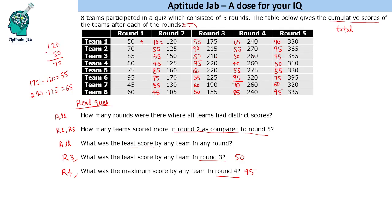How many rounds were there where all teams had distinct scores? In round 1: 50, 70, 85, 85, 85, 95, 45, 60 — wait, 85 repeats, so these are not all distinct. In round 2 we have 85 repeating, so not distinct. In round 3 we have 55 repeating, so not distinct. In round 4 we have 55 repeating, and in round 5 we have 95 repeating. So there is just one round with all distinct scores.